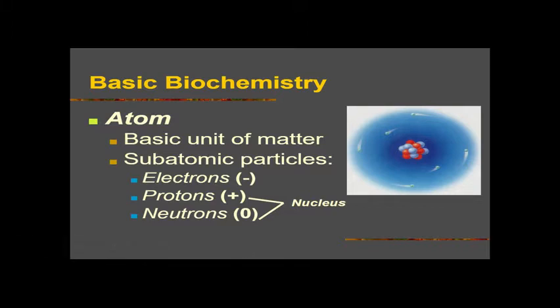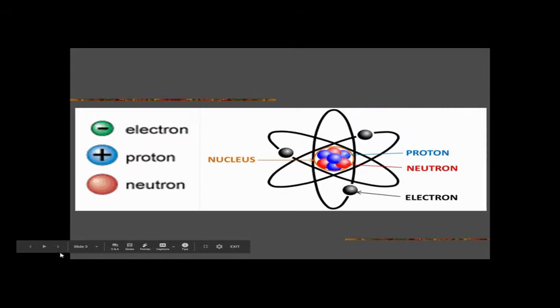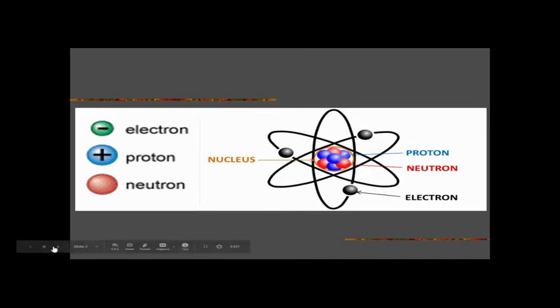What keeps an atom together is the attraction between the negative electrons flying around in what we call the electron cloud on the outside, and the positive nucleus, which is made positive because of the protons there. We often see diagrams of atoms where the electrons are in those rings, showing they're constantly moving, and then the protons and neutrons are in the center.